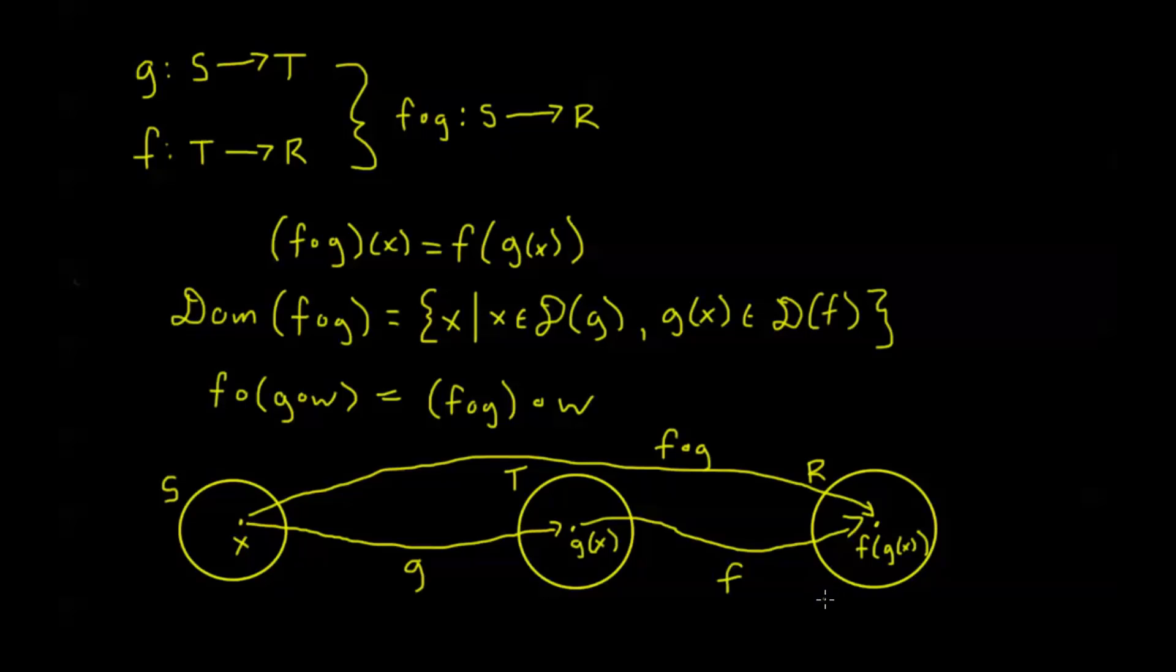And in the next video, we're going to talk about one-to-one and onto functions, talking a little bit more about that distinction between a codomain and a range, and using that to talk about these qualities, the one-to-one quality of a function and the onto quality of a function, and how that's useful. We'll see you there.